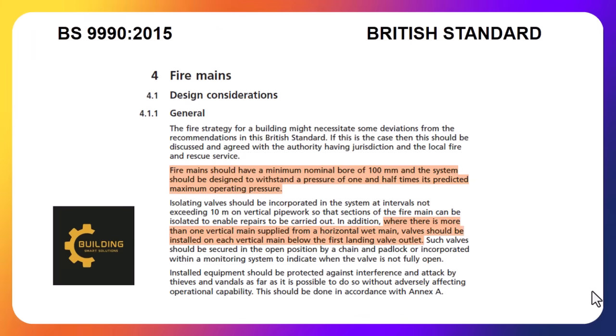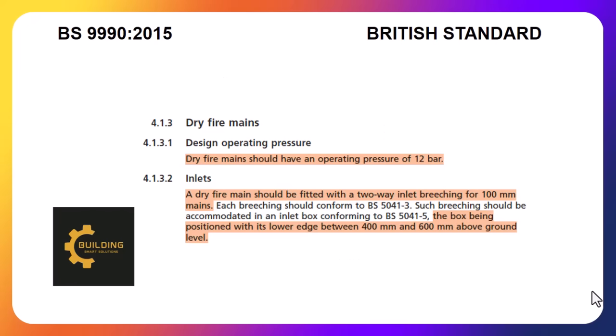The fire main should have a minimum nominal bore of 100mm, and the system should be designed to withstand a pressure of one and a half times the predicted maximum operating pressure. When more than one vertical main is supplied from a single horizontal main, isolation valves should be applied on each vertical main, positioned below the first landing valve outlet.